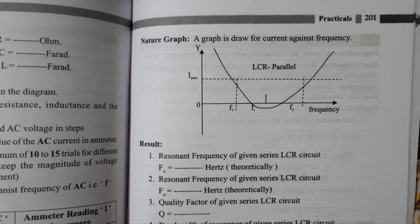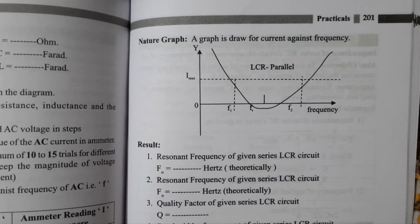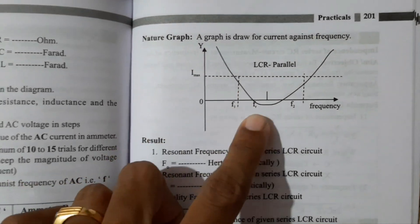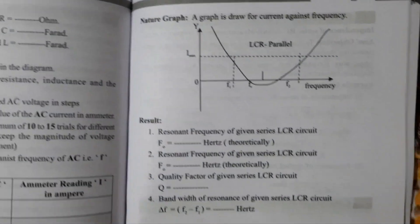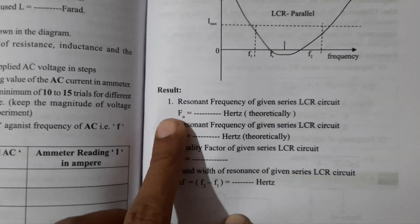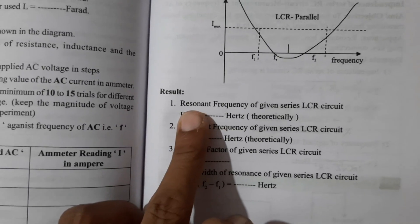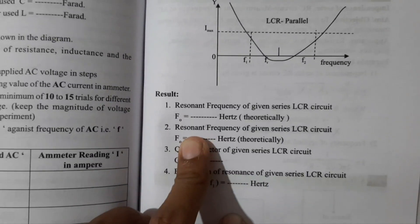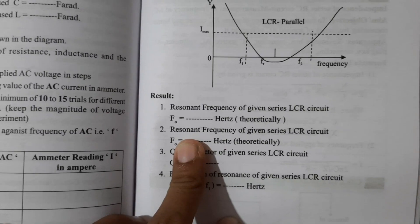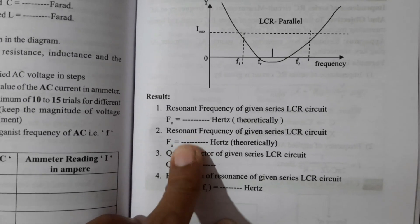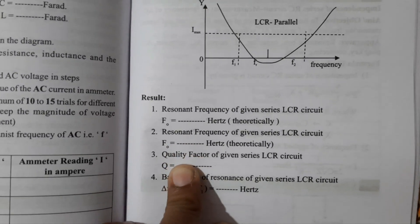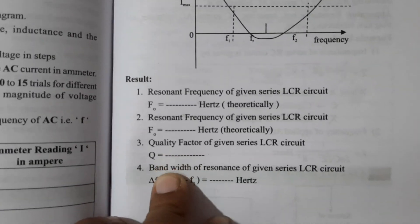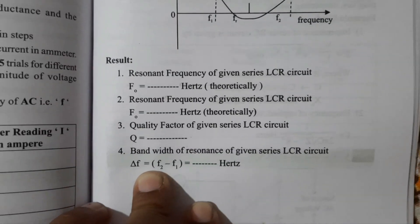So parallel and series circuits are of quite opposite nature in their graphs. After plotting the graph, you can calculate the resonant frequency using the formula mentioned earlier, and also determine the quality factor and bandwidth.